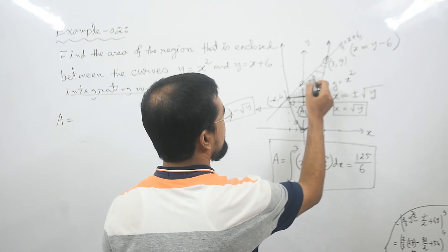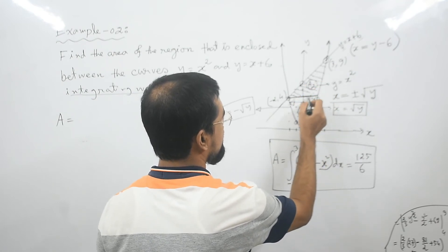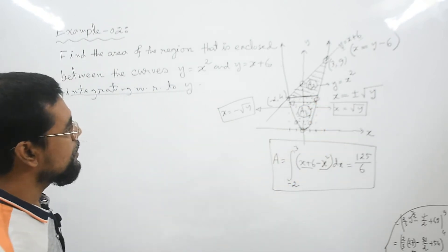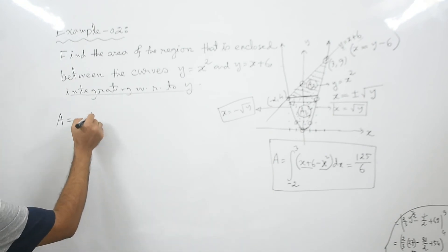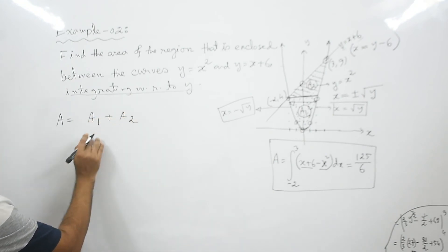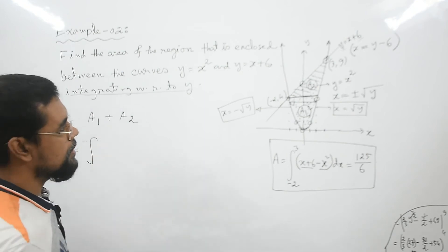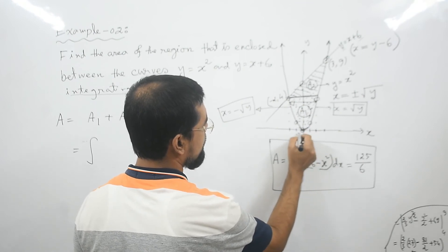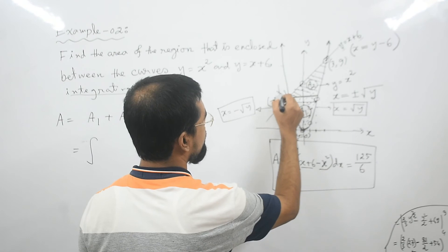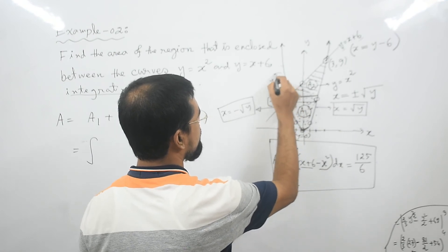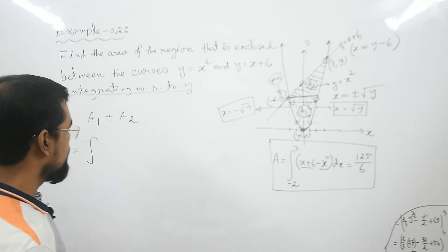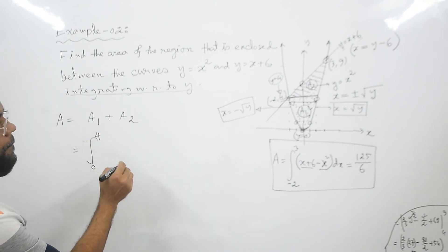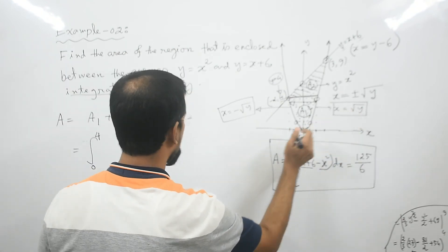The whole area equals A1 plus A2. We calculate each region separately. For region A1, y starts at 0 and ends at y equals 4, so the lower limit is 0 and the upper limit is 4. The curve on the right side of A1 is x equals root y.